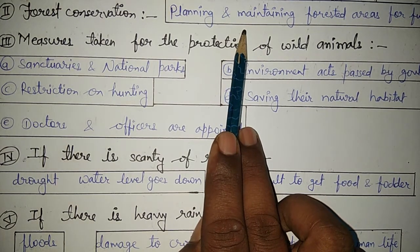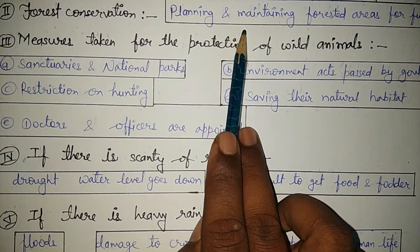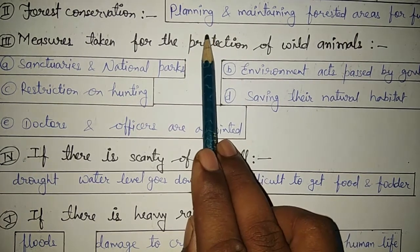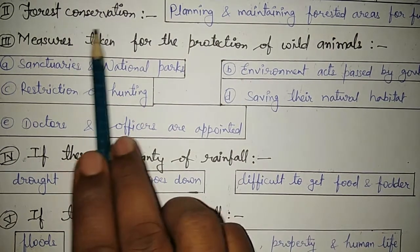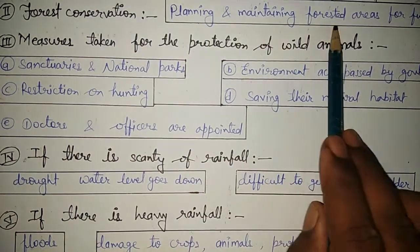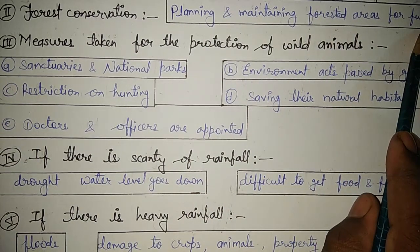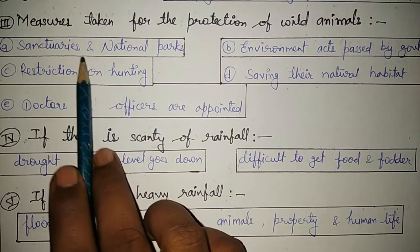Forest conservation means the practice of planning and maintaining forested areas for the benefit and sustainability of future generations. For this, tree plantation and protection of wild animals are necessary. In this way, forest conservation is planning and maintaining forested areas for future generations.